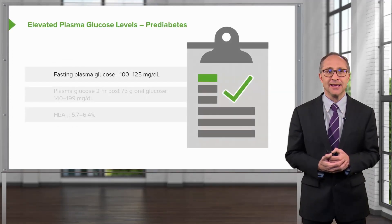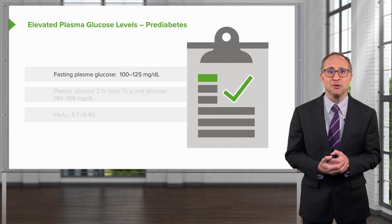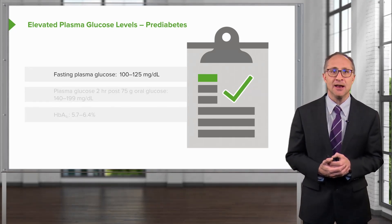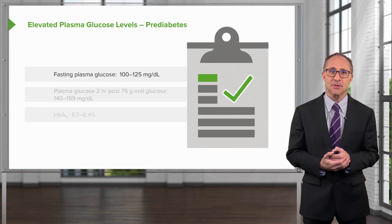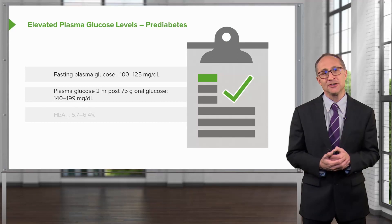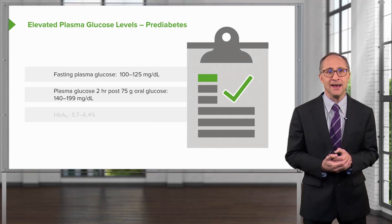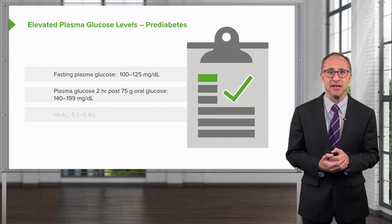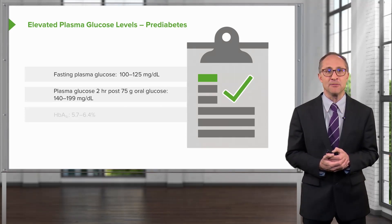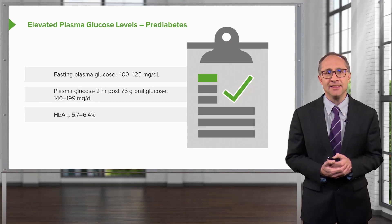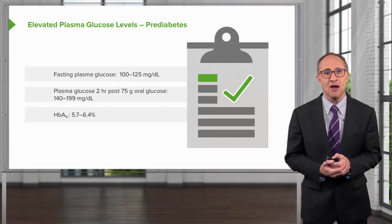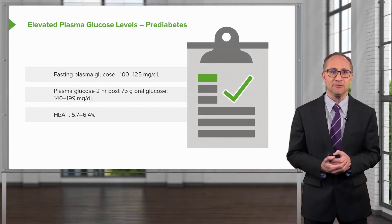Elevated plasma glucose can be defined as a plasma glucose level between 100 and 125 milligrams per deciliter. Also, on a glucose tolerance test, a range of plasma glucose between 140 and 199 milligrams per deciliter, usually two hours after a 75-gram oral glucose load. And finally, a glycosylated hemoglobin level, or hemoglobin A1c, of 5.7 to 6.4%.